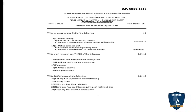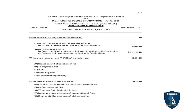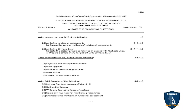Moving on to the November 2016 question paper. Essay questions: out of 2, answer 1. First question 1A: Define nutritional assessment — 2 marks. 1B: Explain the various methods of nutritional assessment — 8 marks, totalling 10 marks. Second question 2A: Define cirrhosis of liver — 2 marks. 2B: State the dietary principles followed in a patient with cirrhosis of liver — 4 marks. 2C: Prepare a sample menu plan for cirrhosis of liver — 4 marks. Total: 10 marks.